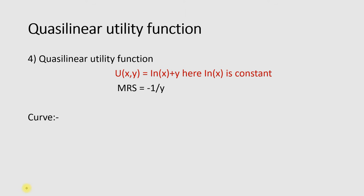Last, we have the quasi-linear utility function, which is usually represented in a form where one variable is linear and the other is non-linear. In this case, the consumer is only interested in the consumption of y and does not care about the quantity of x. You will get a function like 2y plus some function of x. In the quasi-linear utility function, you always have to differentiate the utility function to find the marginal rate of substitution — the marginal rate of substitution will be this.